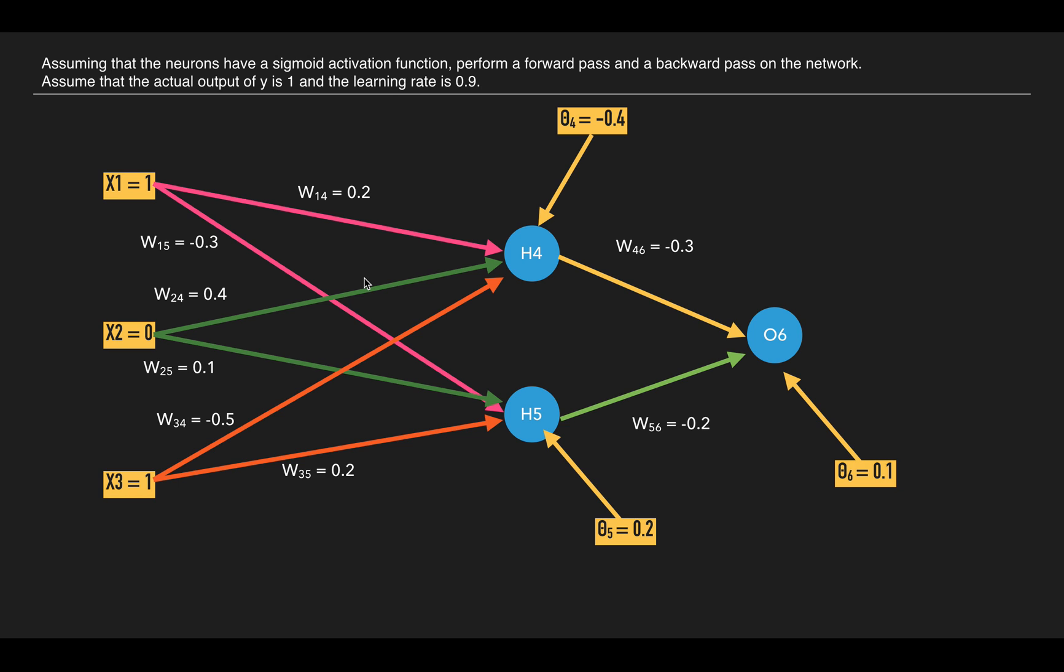Okay, so let us look at an example. Assuming that the neurons have a sigmoid activation function, perform a forward pass and a backward pass on the network. Assume the actual output y is 1 and the learning rate is 0.9. We have given the n value and we have given the input 1, 0, and 1—three parameters—and the actual output is 1.